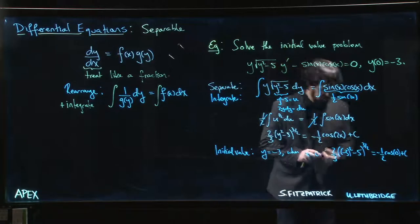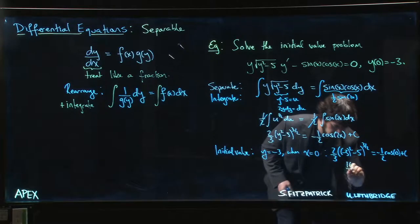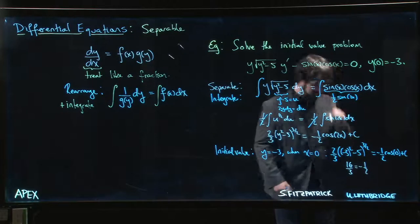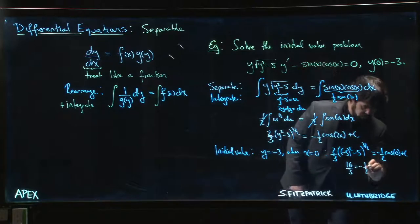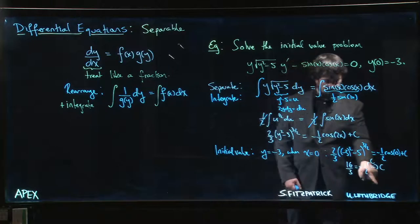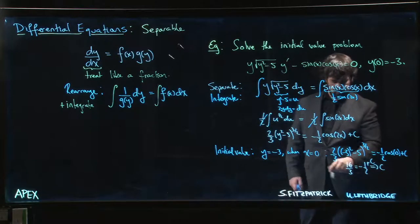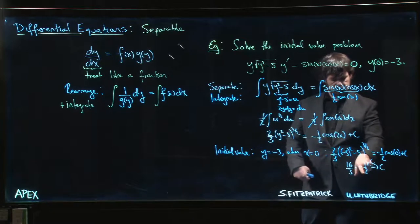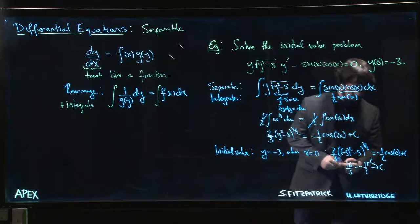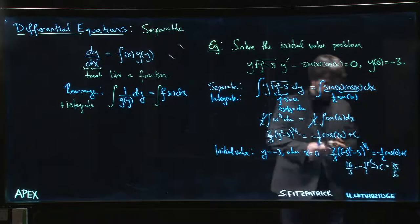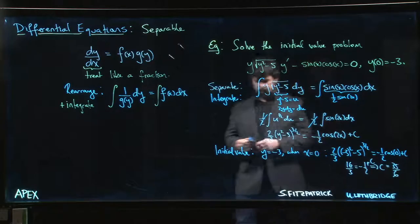Is equal to minus one half plus c. C is still there. So we add one half over here. Sixteen over three is thirty two over six, we're going to add three over six. We get c is equal to thirty five over six.